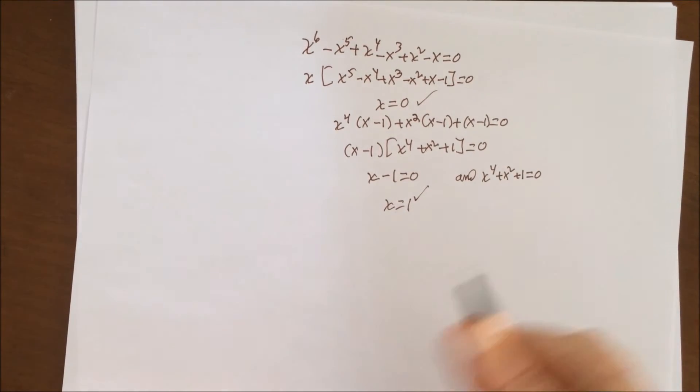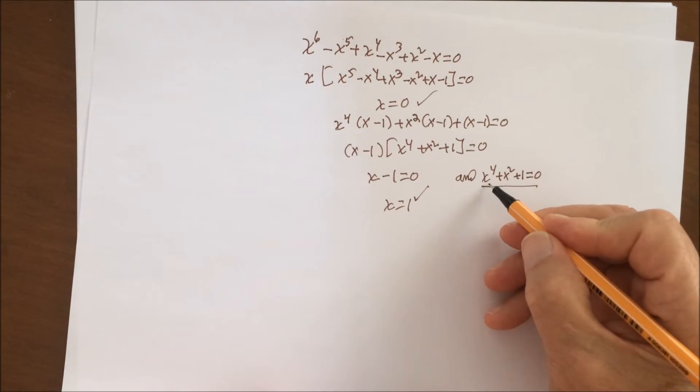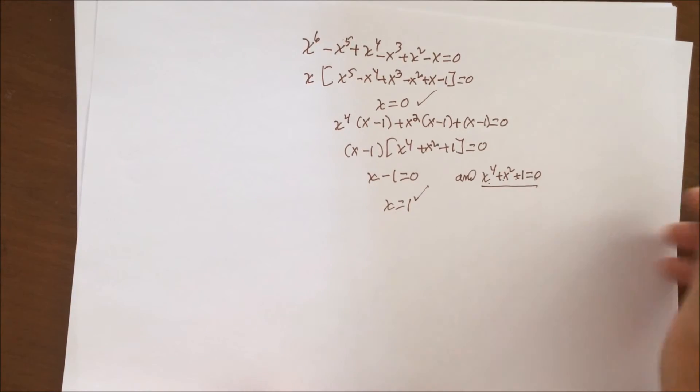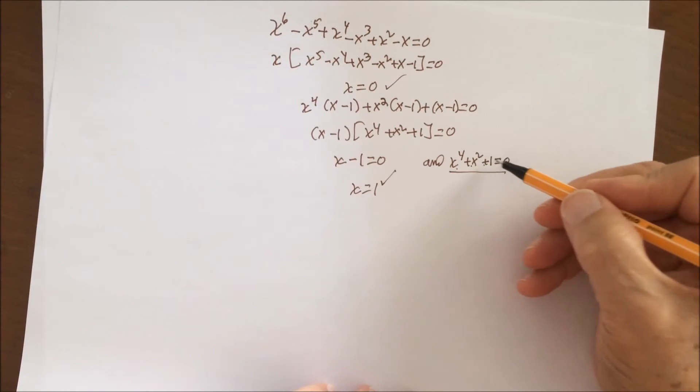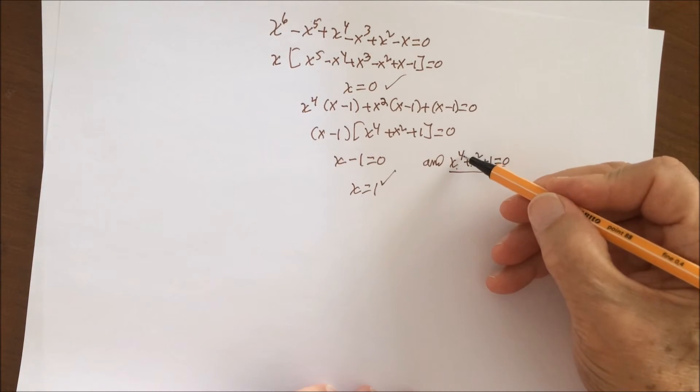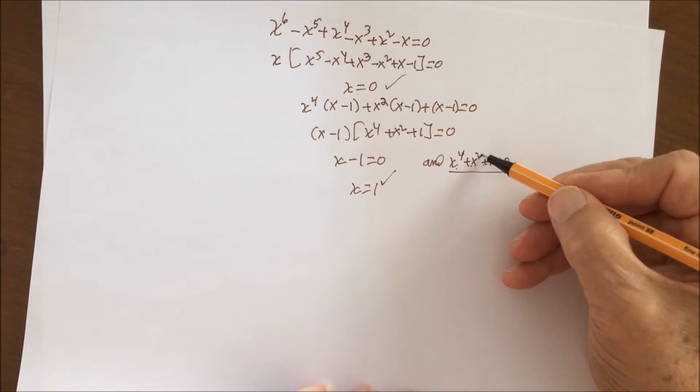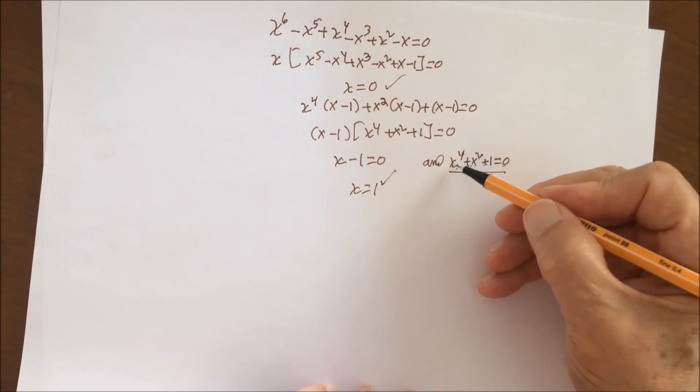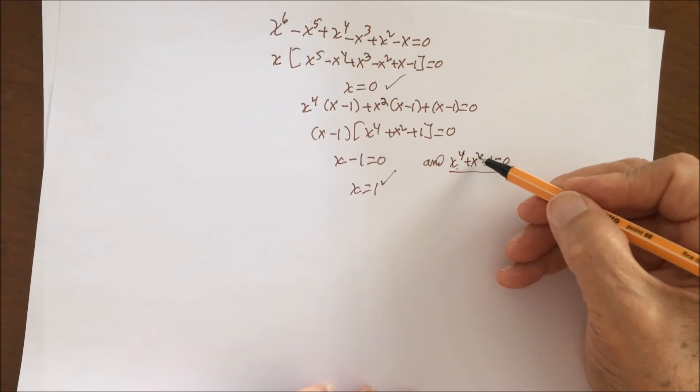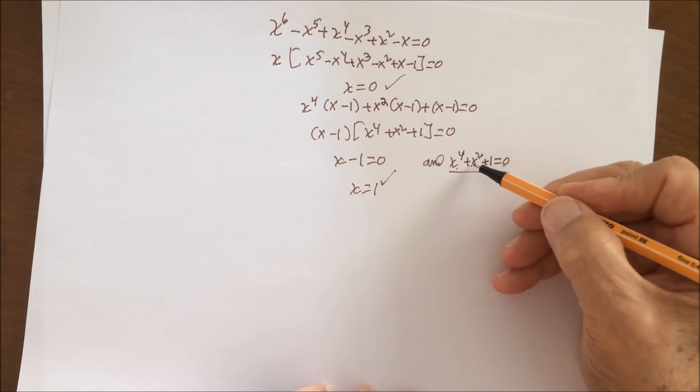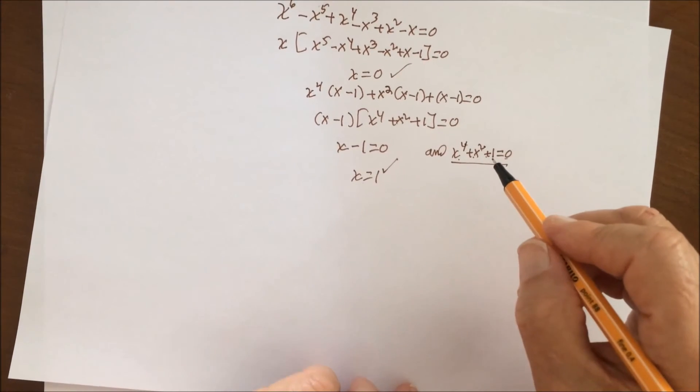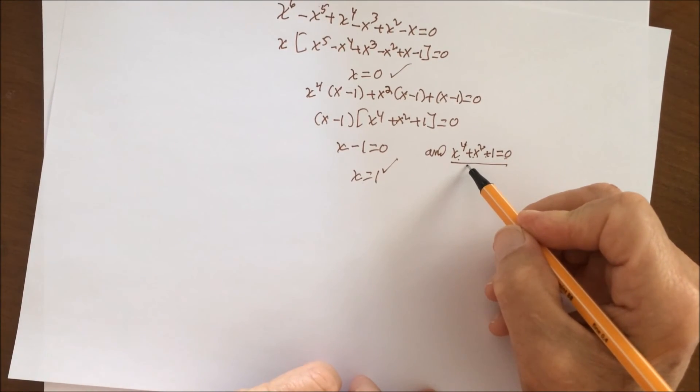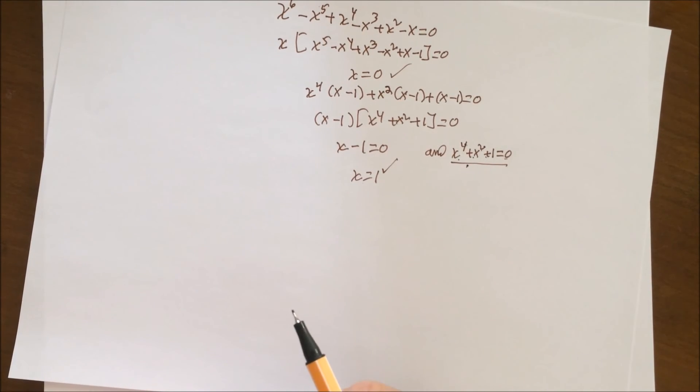Now let's look at the remaining term: x to the fourth plus x squared plus one equals zero. We're going to use a little bit of logic. Whether the solution to this is positive or negative, since the exponent is four and the exponent here is two, if x is negative, the x to the fourth term will be positive, the x squared term will be positive. So we have two positive numbers plus one equals zero. Therefore, there are no more real solutions to this equation. The remaining four solutions to this equation are all imaginary, in other words involving the square root of minus one.